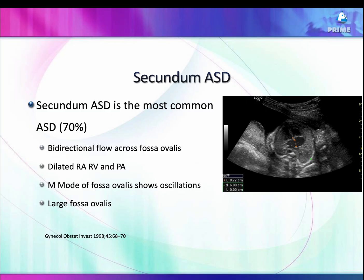There have been markers for quite some time, but they are neither sensitive nor specific for a secundum ASD. Bidirectional flow in the fossa ovalis, dilated RA and RV, M-mode showing oscillation in the atrial septum, or a larger-than-usual fossa ovalis are markers which raise suspicion, but I recommend you do not report any of them.